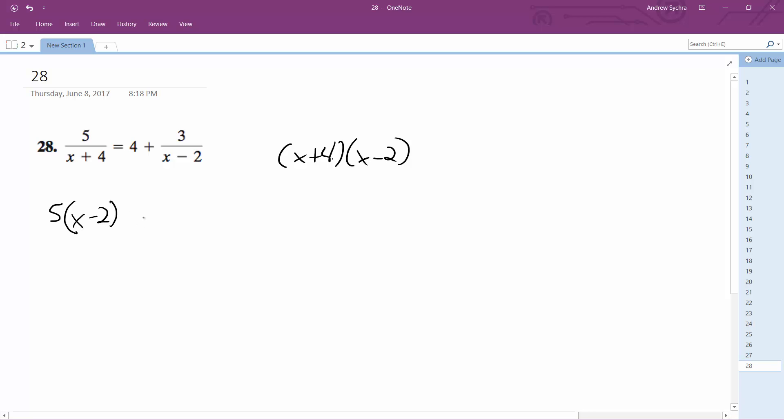minus 2, because that's on the bottom, equals 4 times quantity (x+4)(x-2) plus 3 times quantity (x+4). So then we get 5x minus 10 is equal to 4 quantity